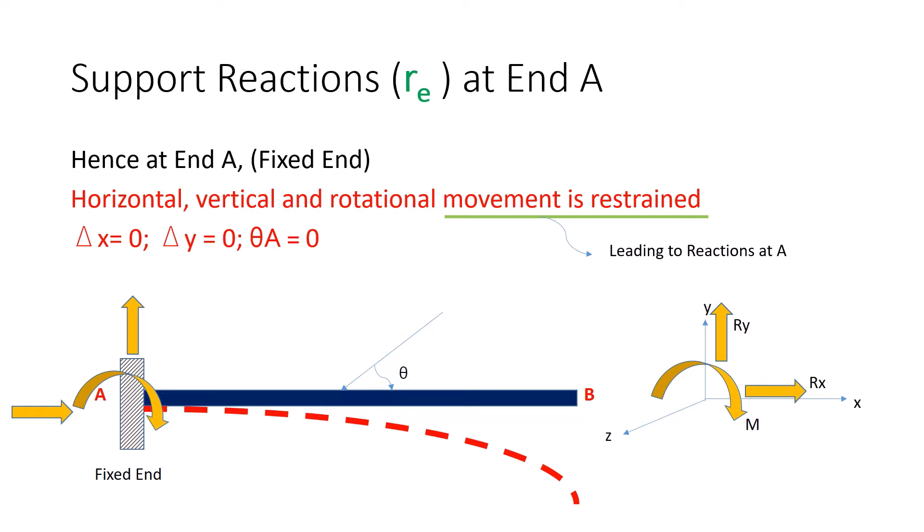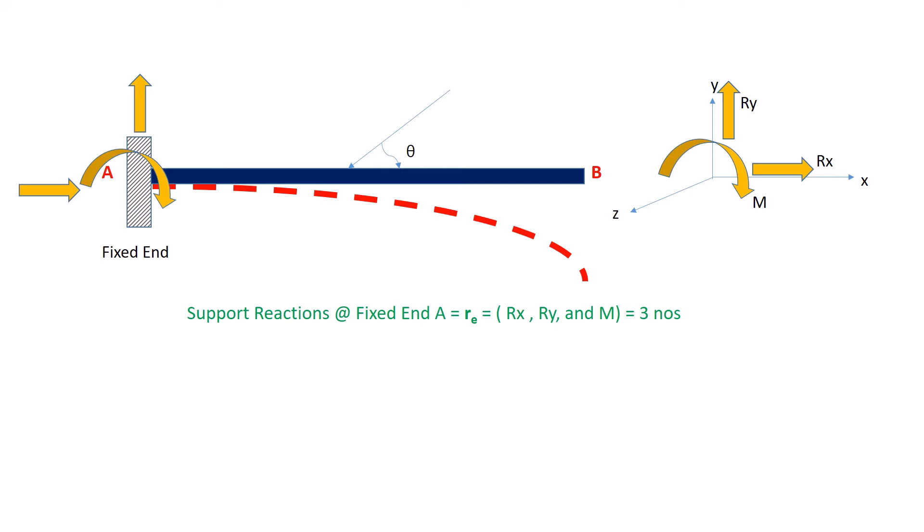Support reaction at fixed end A is RE, which is given by RX, RY, and M. There are total of three numbers of support reactions at A. This is how we derive the external support reactions at a particular fixed end. These are called external support reactions, which will be later taken into consideration while determining the indeterminacy of structure.